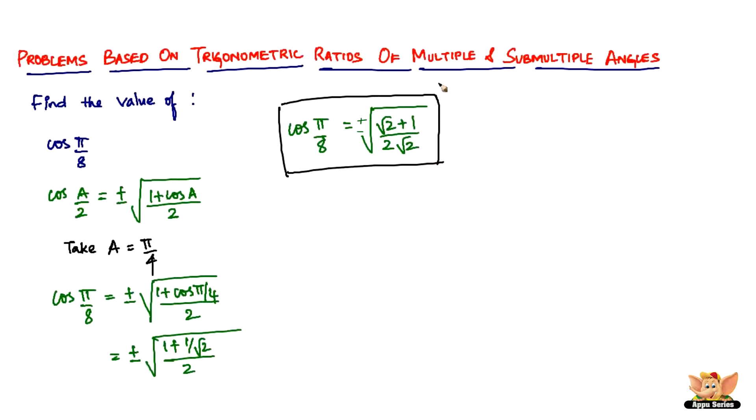Let's quickly solve another problem. The next problem is: find the value of sin π/8. For sin π/8, we need to take sin(A/2), which is nothing but plus or minus square root of (1 - cos A)/2.